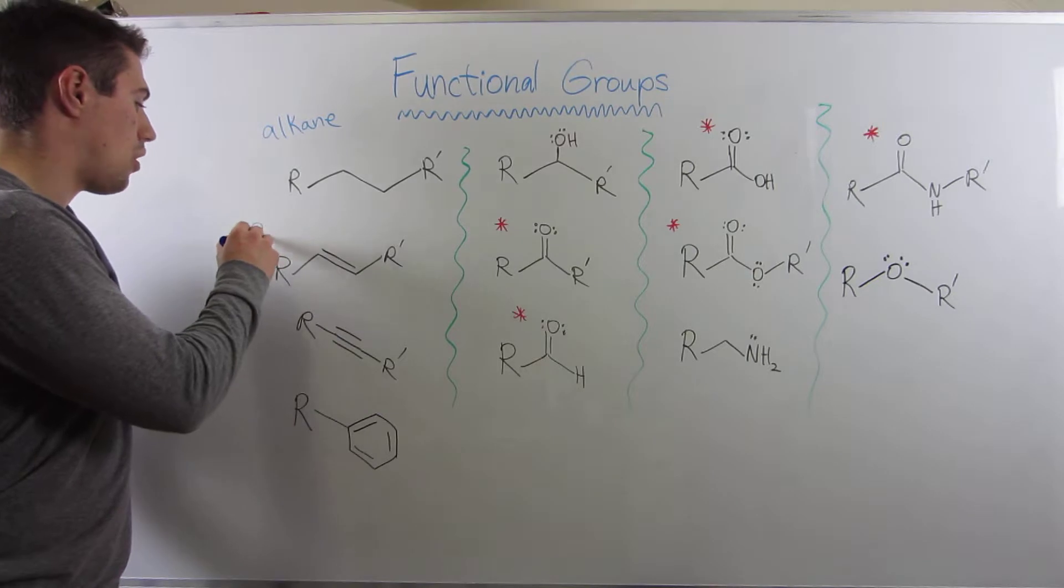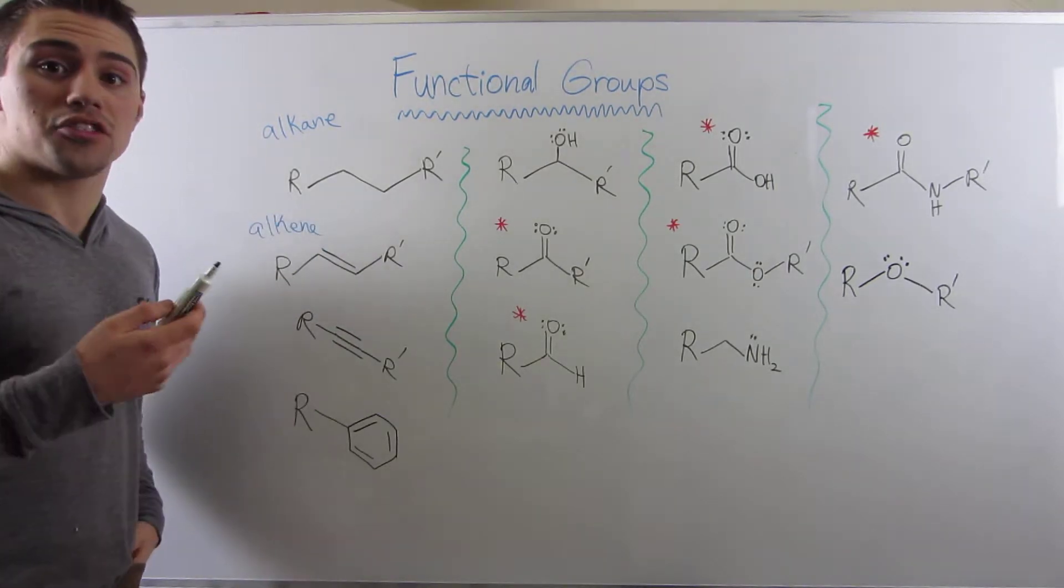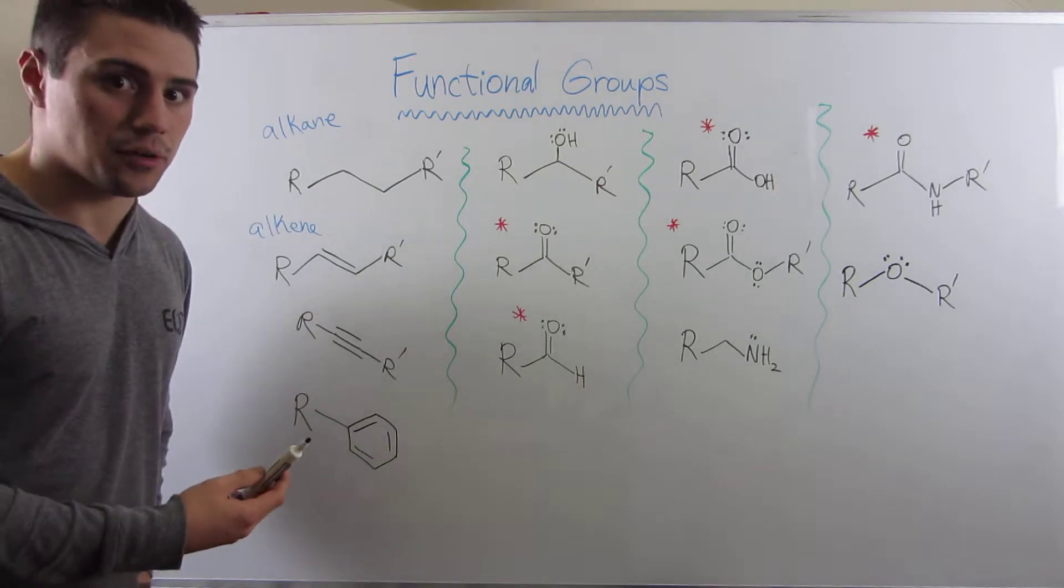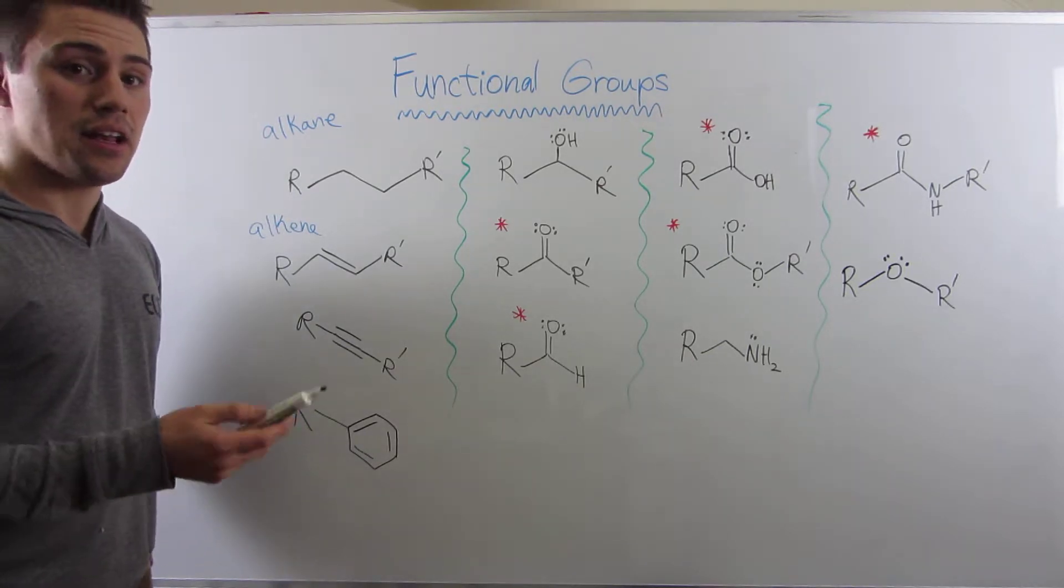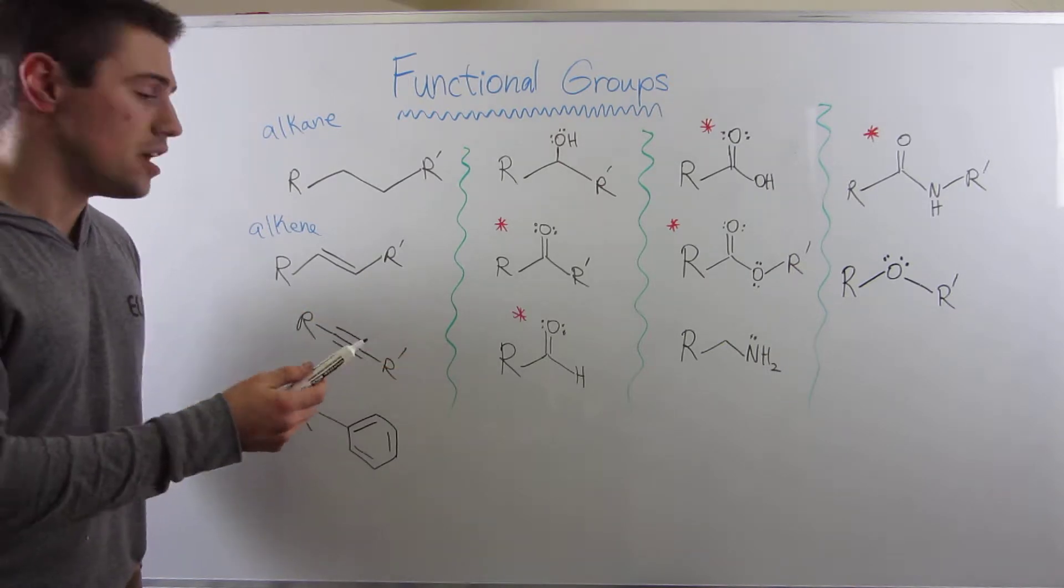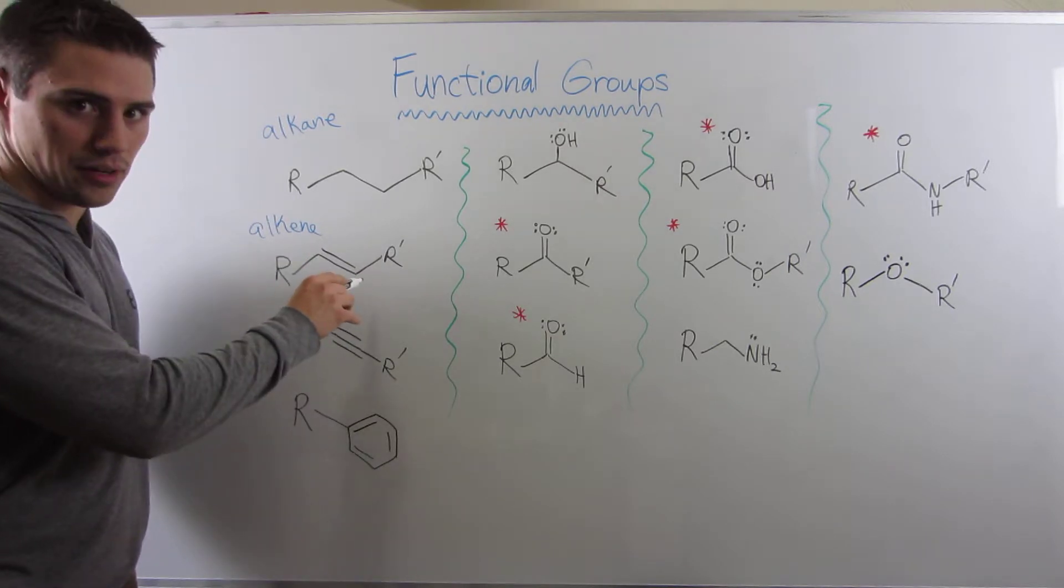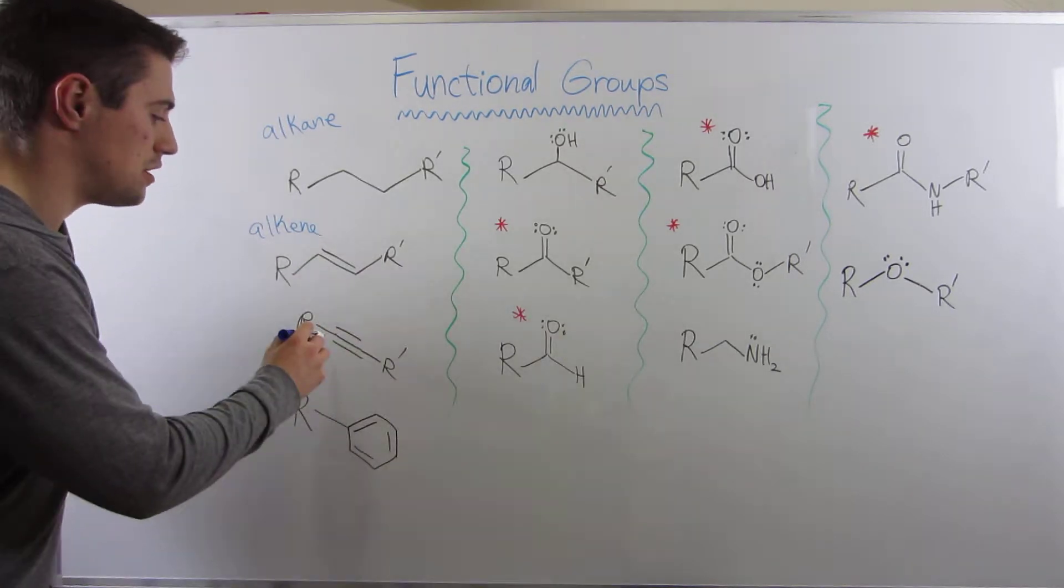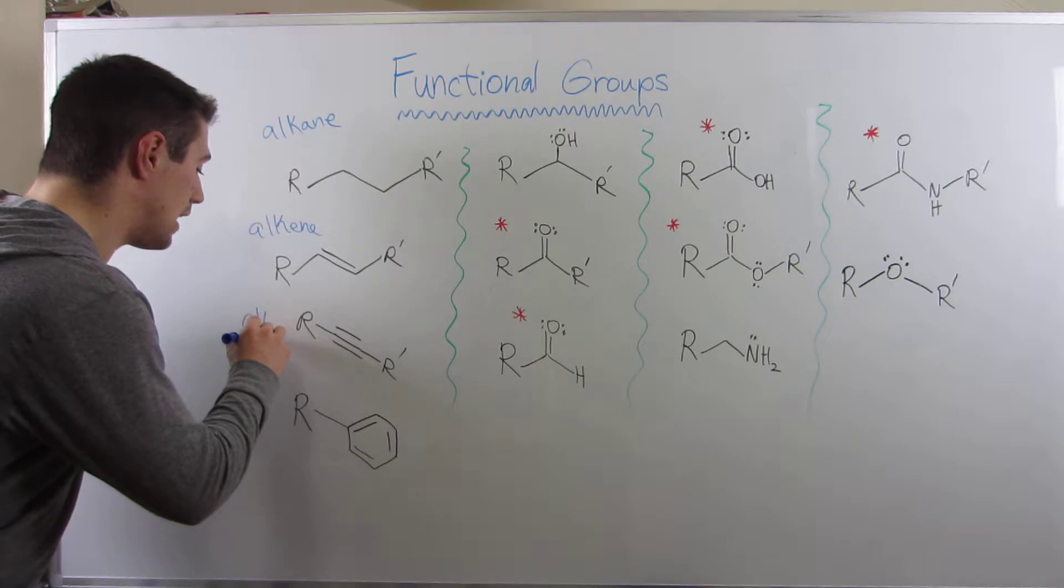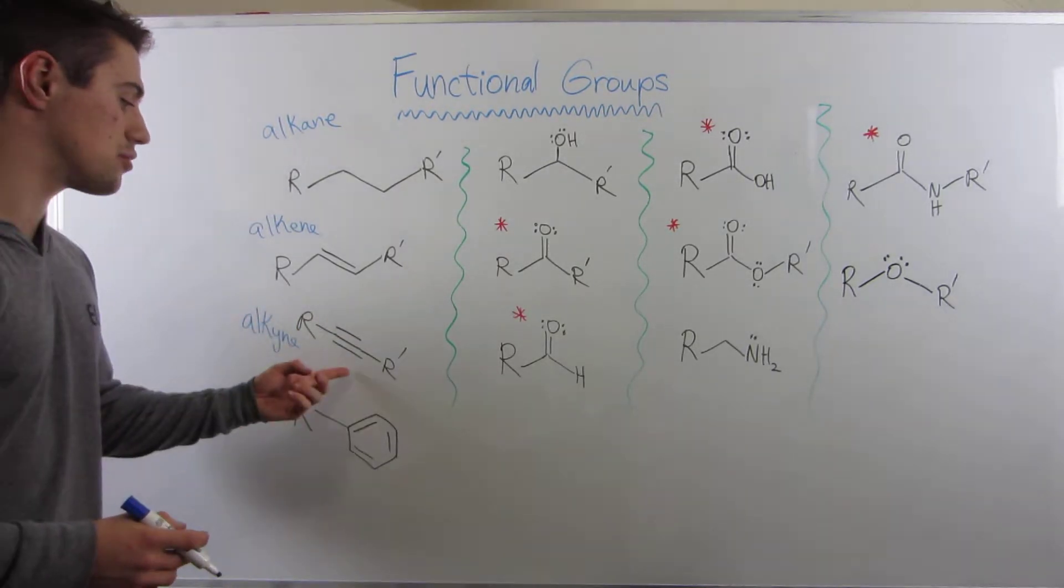Okay, so now moving down here, this is what we would call an alkene. So you're going to have at least one degree of unsaturation in an alkene, and what I mean by that is that instead of having all carbon-carbon bonds and carbon-hydrogen bonds, there's going to be at least a double bond or a triple bond, but for alkenes, double bond. That's what you need to think of. Down here, we have an alkyne, and what's characteristic of an alkyne is that there's a triple bond.